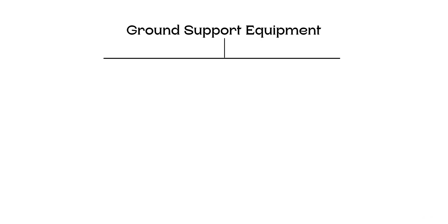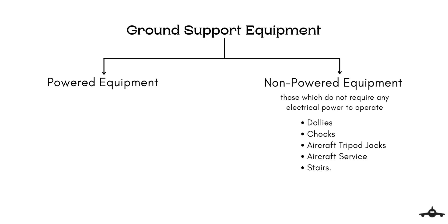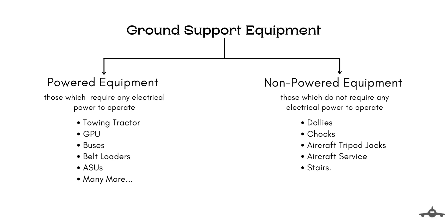There are two categories of ground support equipment: powered equipment and non-powered equipment. The non-powered equipment are those which do not require any electrical power to operate, such as dollies, chalks, aircraft tripod jacks, and aircraft service stairs. The powered equipment are those which require electrical power to operate, such as tugs, tractors, GPUs, buses, belt loaders, ASUs, etc.